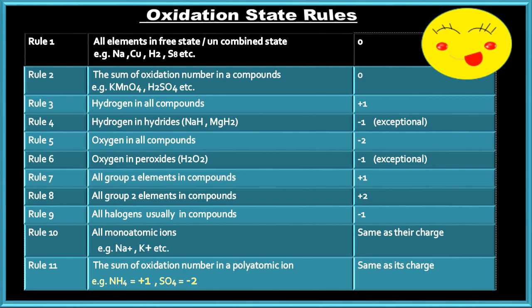Rule No. 3: Hydrogen in all compounds has a plus one oxidation state. Rule No. 4 (Exception): Hydrogen in hydrides, for example sodium hydride and magnesium hydride, has an oxidation state of minus one. Rule No. 5/6: Oxygen usually has an oxidation state of minus two, except in peroxides where oxygen has an oxidation state of minus one.